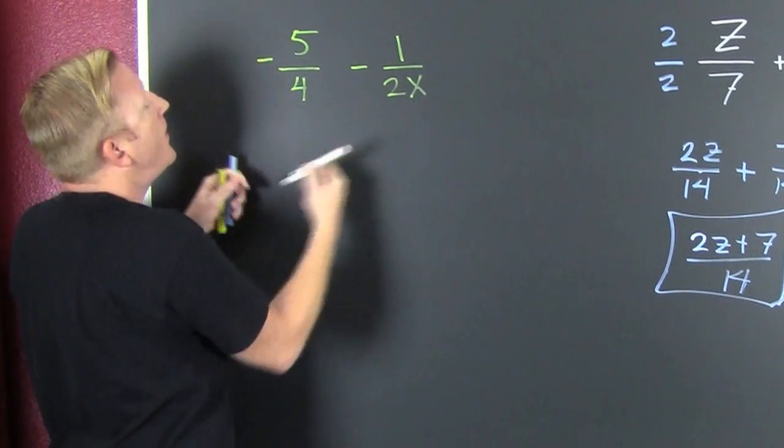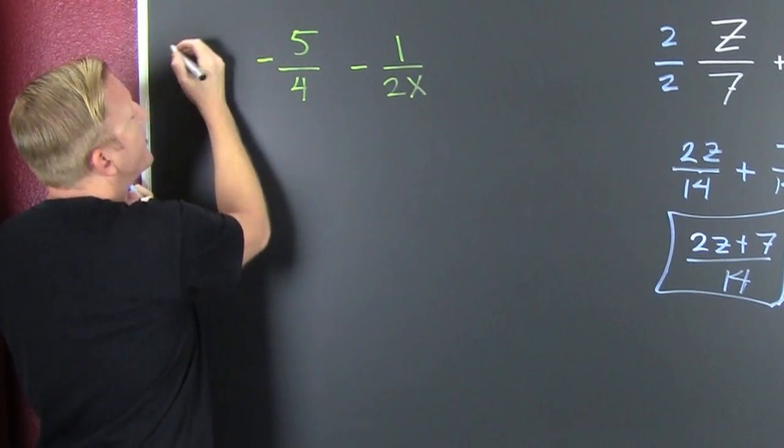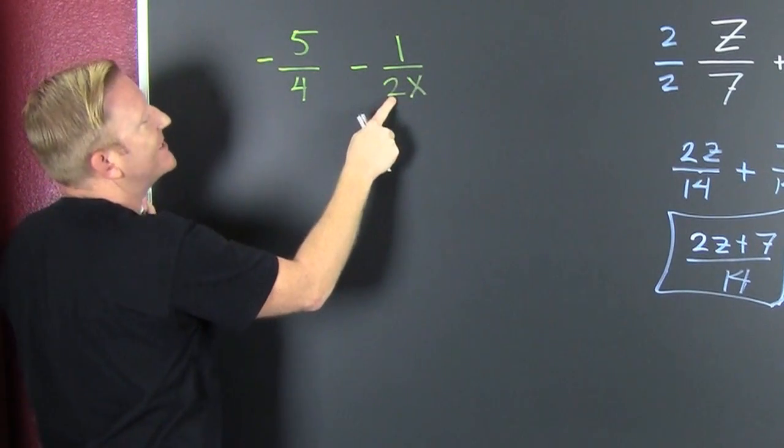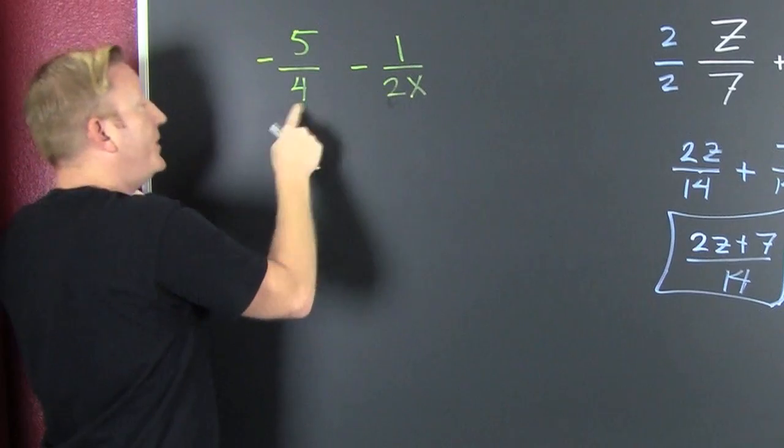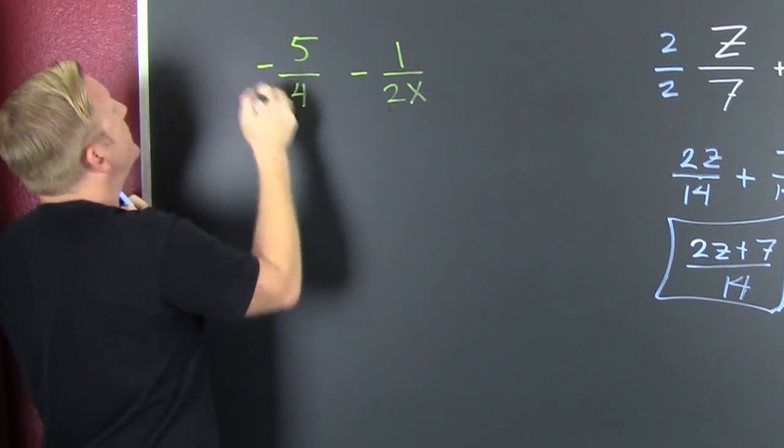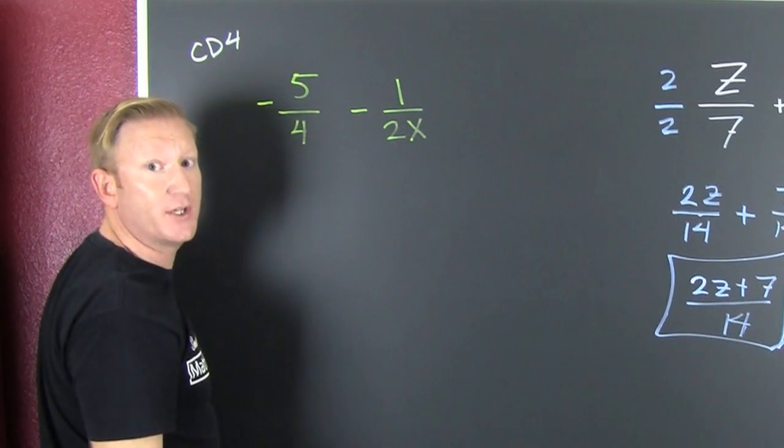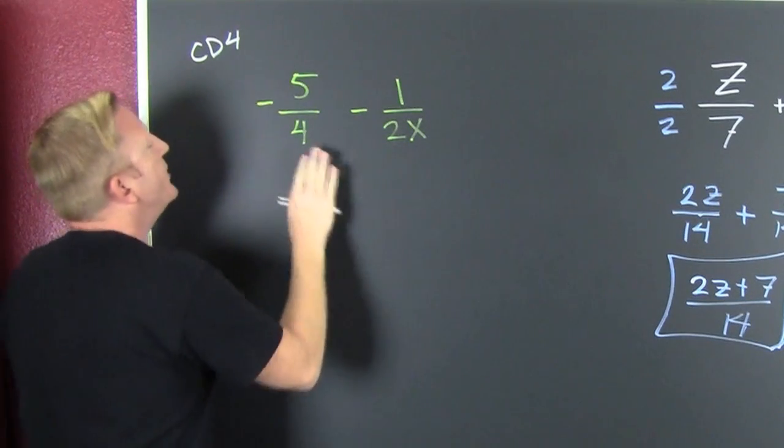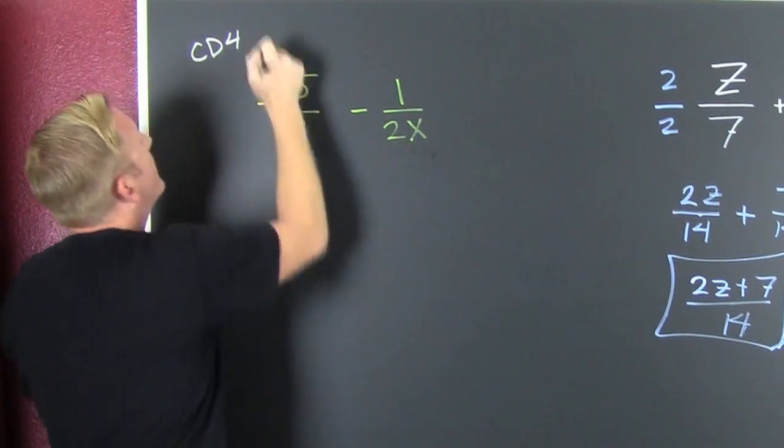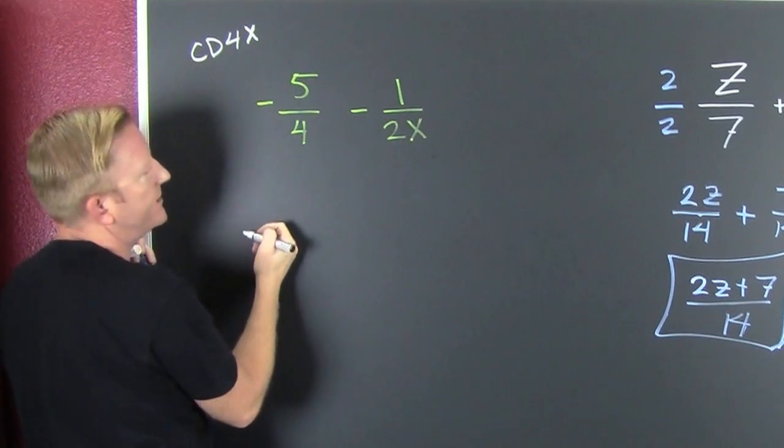So we need a common denominator. What's a common denominator of all the denominators? I see the 2 can be a 4 if I multiply it by a 2, so the common denominator is going to have a 4 in there. That's the first number that they're both going to multiply to be. Then, we see that has an X, so the common denominator has an X in it too.